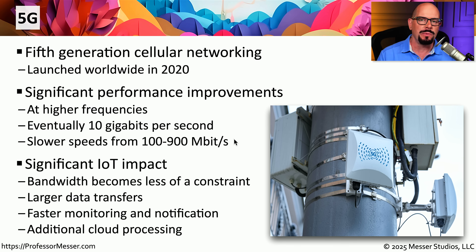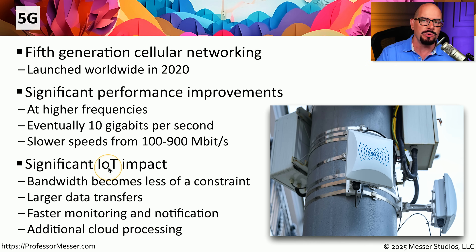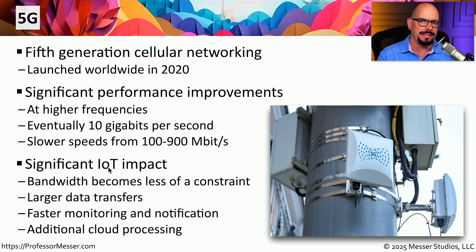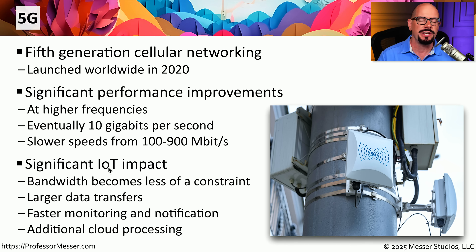Having that much bandwidth available for a single device changes how we're able to use these devices. For example, Internet of Things, or IoT, now allows much more functionality because we're not constrained by the amount of bandwidth we can send. We're able to take IoT devices over 5G networks and instantly send large amounts of data over wireless networks, getting notifications faster and transmitting much more data to the cloud for processing.